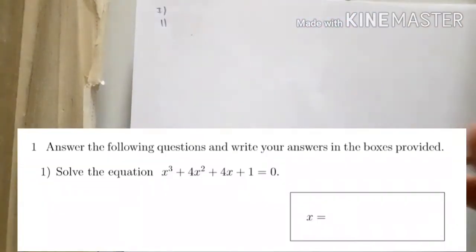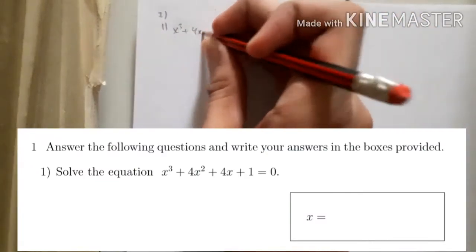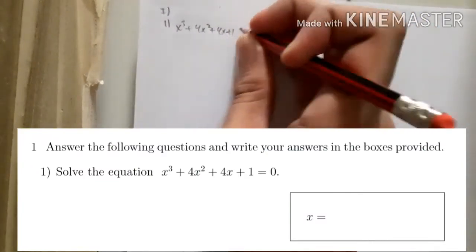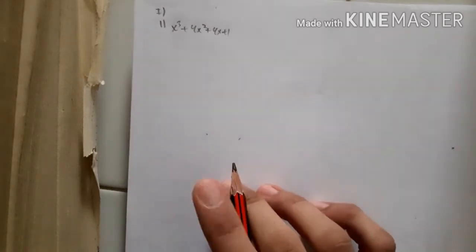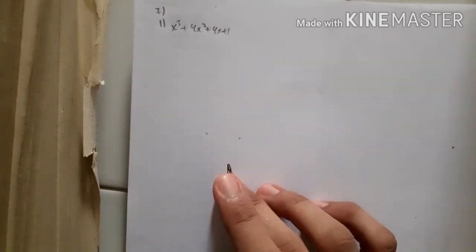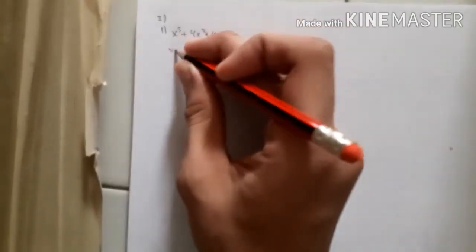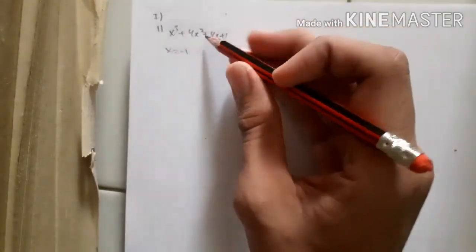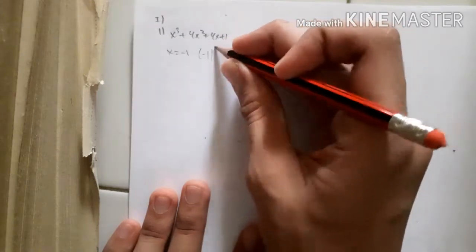First, let's solve the equation x³ + 4x² + 4x + 1. The goal is to find the roots of this cubic equation. To do this, we use the Horner method, where we substitute values until the function results in 0.